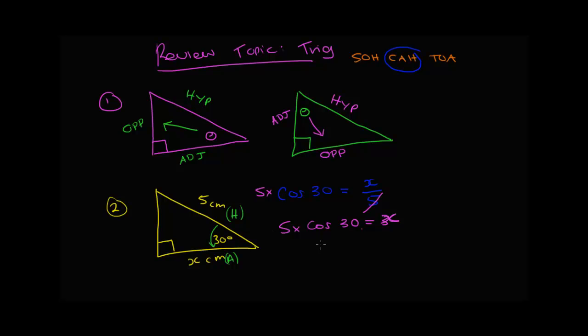And the good thing is now, all we need to do is get that trustworthy calculator out, whack in 5 times cos 30, and it comes out to be around about 4.3 centimeters. That's to one decimal place. Now, obviously, looking with our sine, cosine, tan functions now, most of the time, it's going to come out as a decimal. So, one decimal place or two decimal places, either one's okay. Don't round it to a whole number unless they ask you to, or they specify you to.